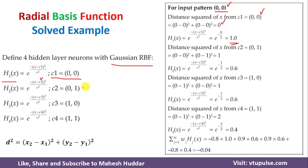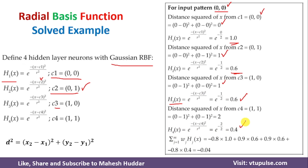From input pattern 00, we calculate the distance to the second hidden layer neuron. The center c2 equals 01. The distance is (0 minus 0) squared plus (0 minus 1) squared, which equals 1. The numerator divided by 2 gives 0.5, so h2(x) equals 0.6. Similarly, for the third center 10, the distance is (0 minus 1) squared plus (0 minus 0) squared, which again equals 1, giving h3(x) equals 0.6. For h4(x), we get 0.4.